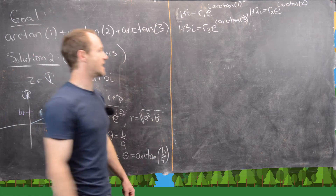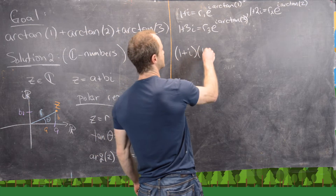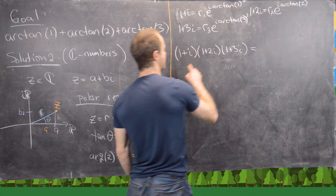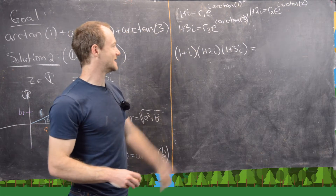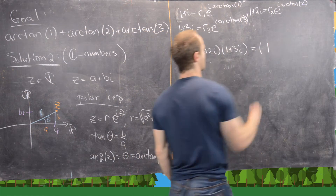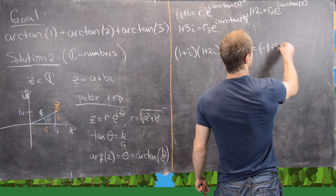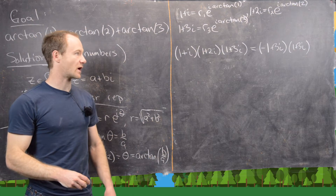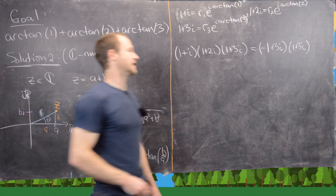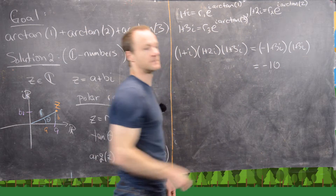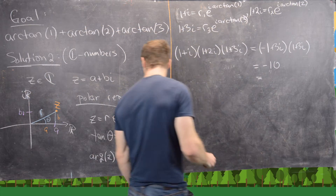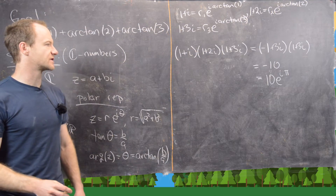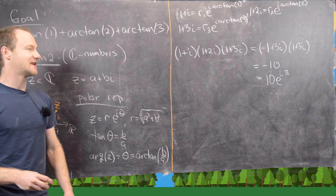Now we multiply these two different ways. First, rectangularly: (1+i)(1+2i)(1+3i). Multiplying the first two: 1 times 1 is 1, minus 2 from i times i, giving real part negative 1, and imaginary part 3i, so we get negative 1 plus 3i. Then multiplying by 1 plus 3i — the imaginary parts cancel like a difference of squares — giving us negative 1 minus 9, so negative 10. In polar form, that's 10 times e to the i pi, using Euler's formula that negative 1 equals e to the i pi.